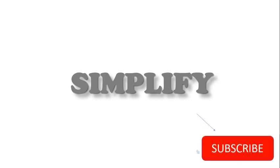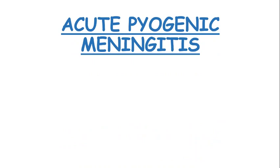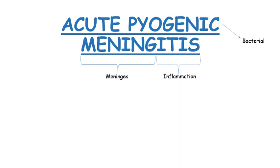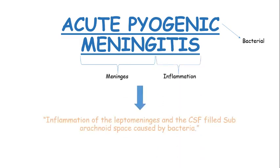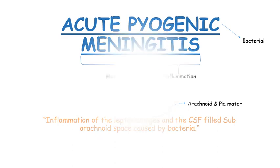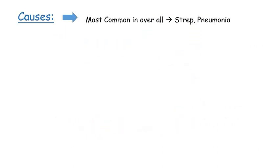Acute pyogenic meningitis — where pyogenic means bacterial — is the inflammation of the leptomeninges, which are the arachnoid and pia mater, and the cerebrospinal fluid in the subarachnoid space, caused by bacteria. The most common cause across all ages is Streptococcus pneumoniae.